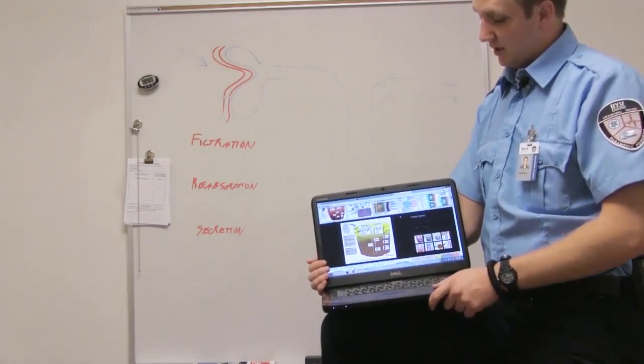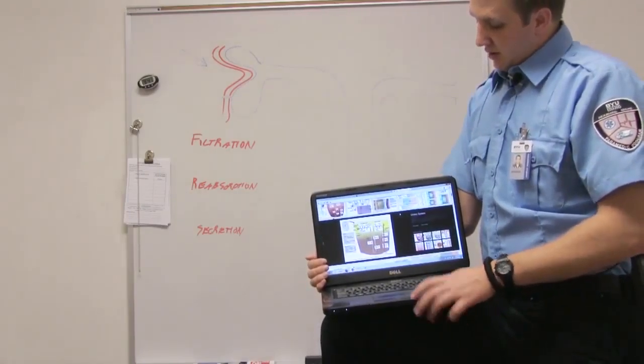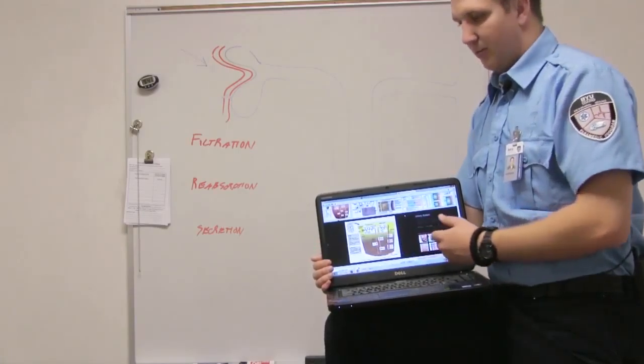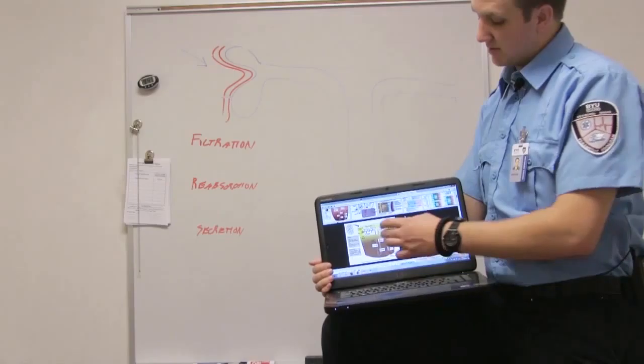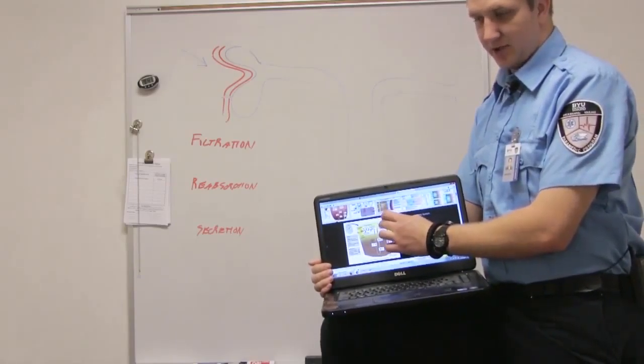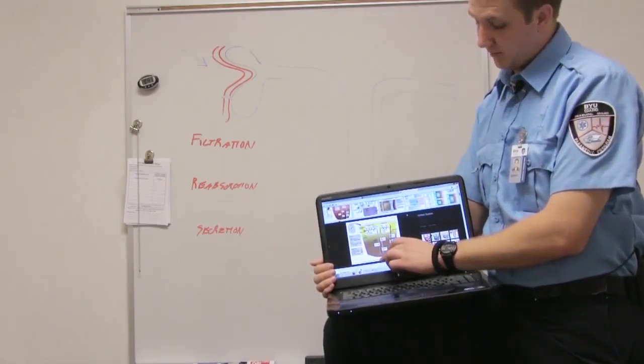And in the book it gives you numbers to kind of illustrate that. But as we go down, we're pulling water out of the nephron. So our solute concentration becomes greater and greater and greater the deeper we go.